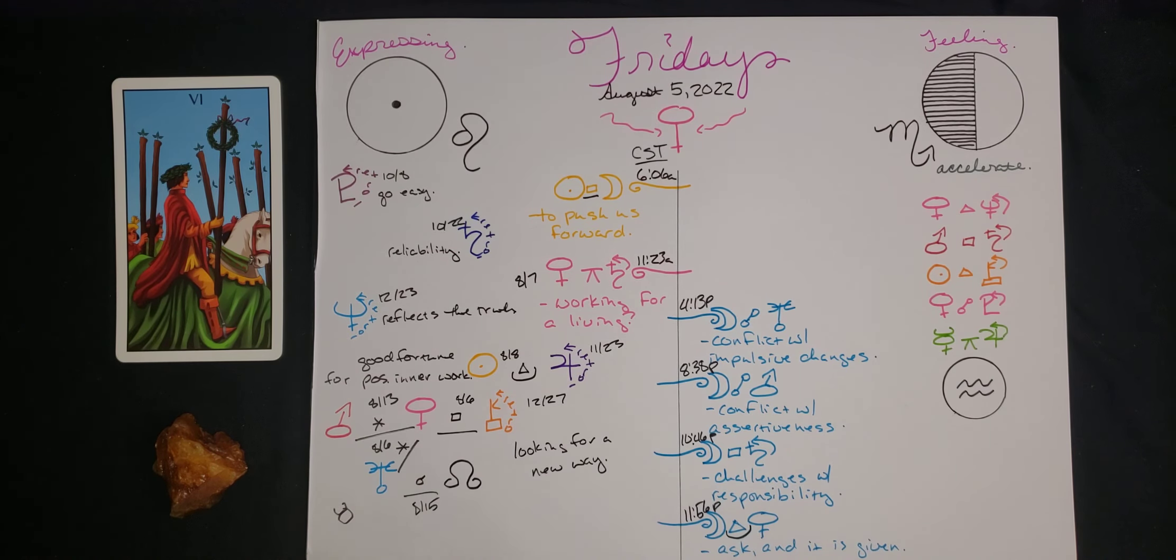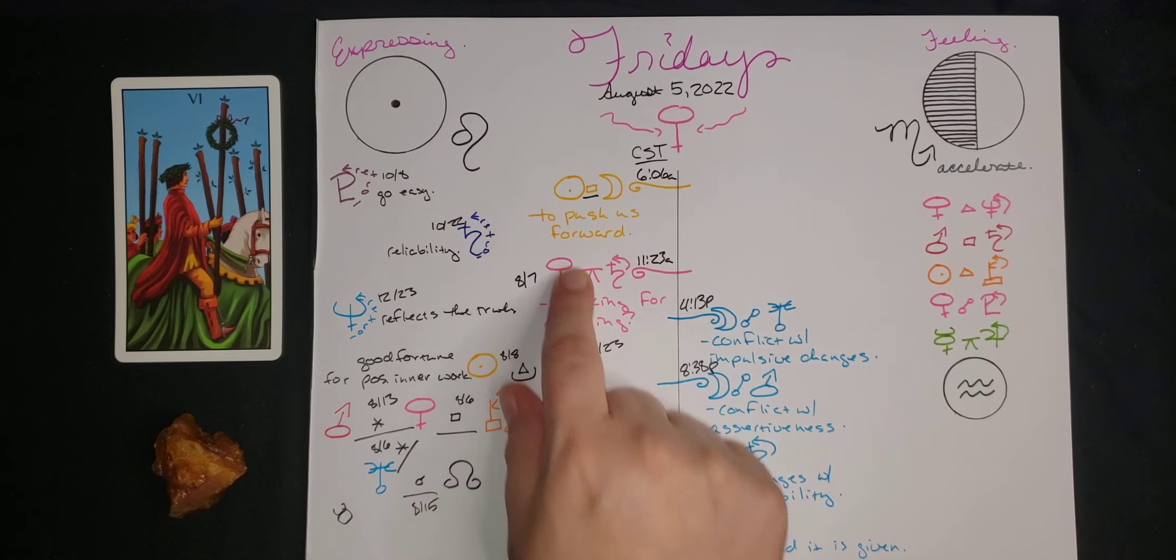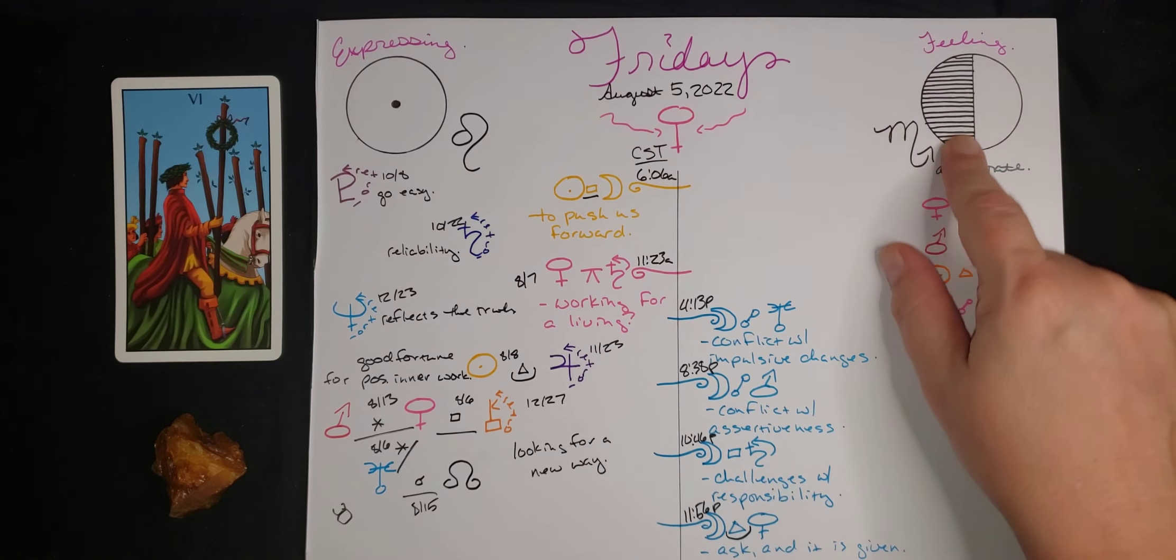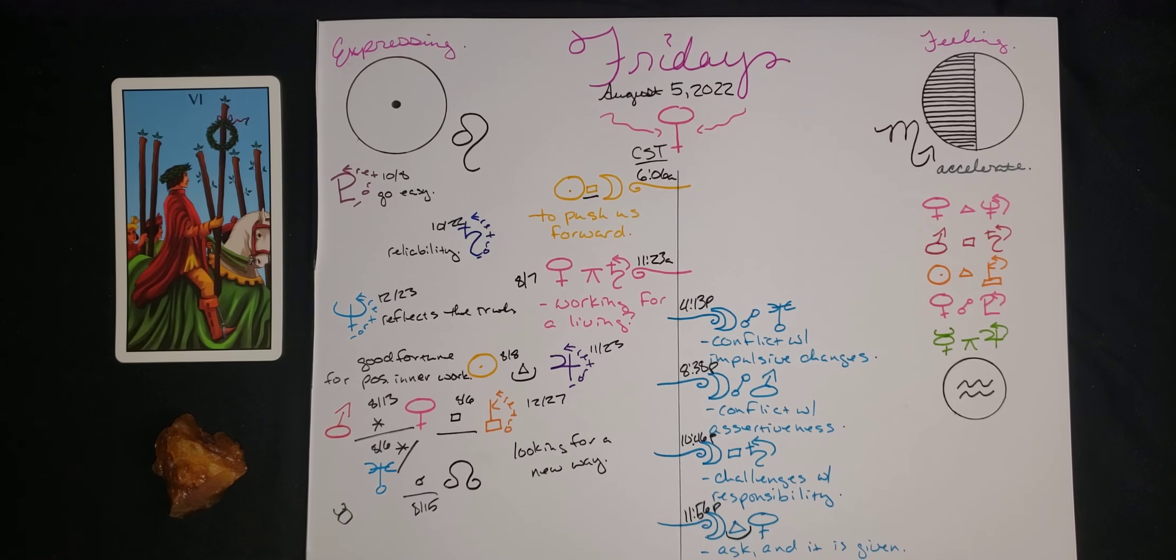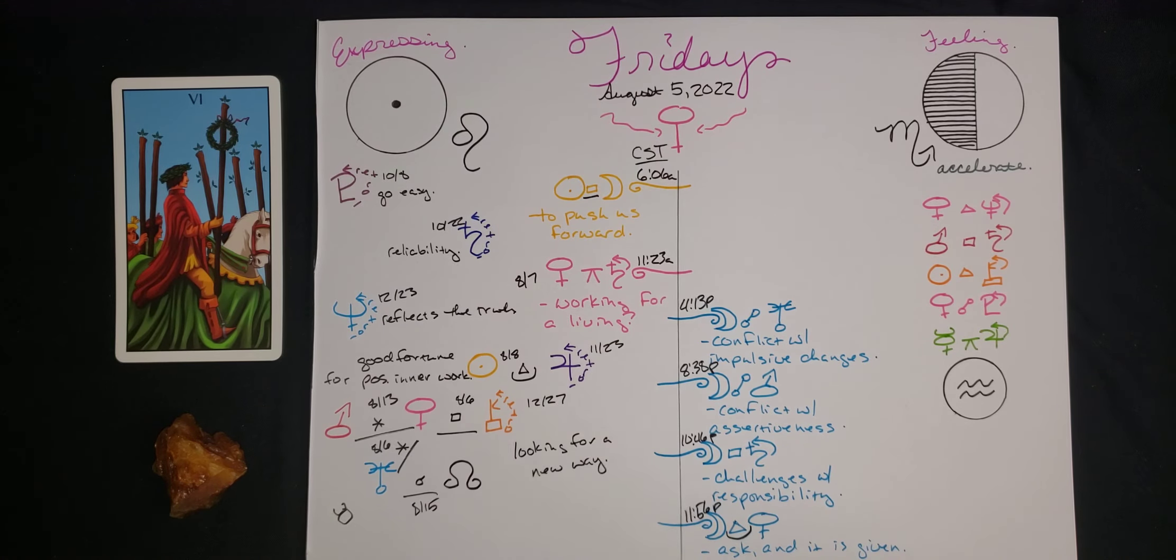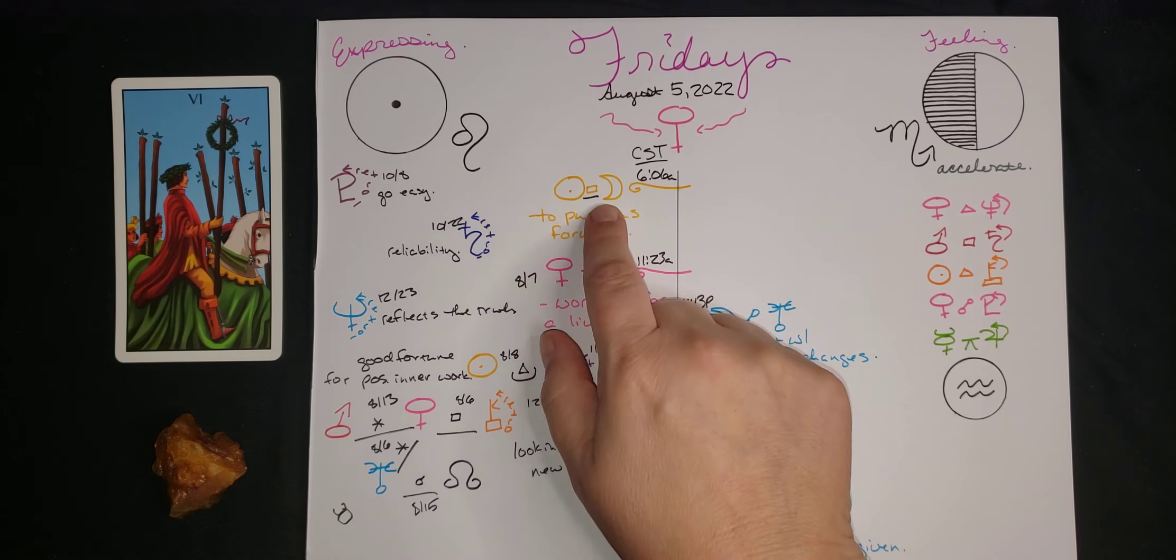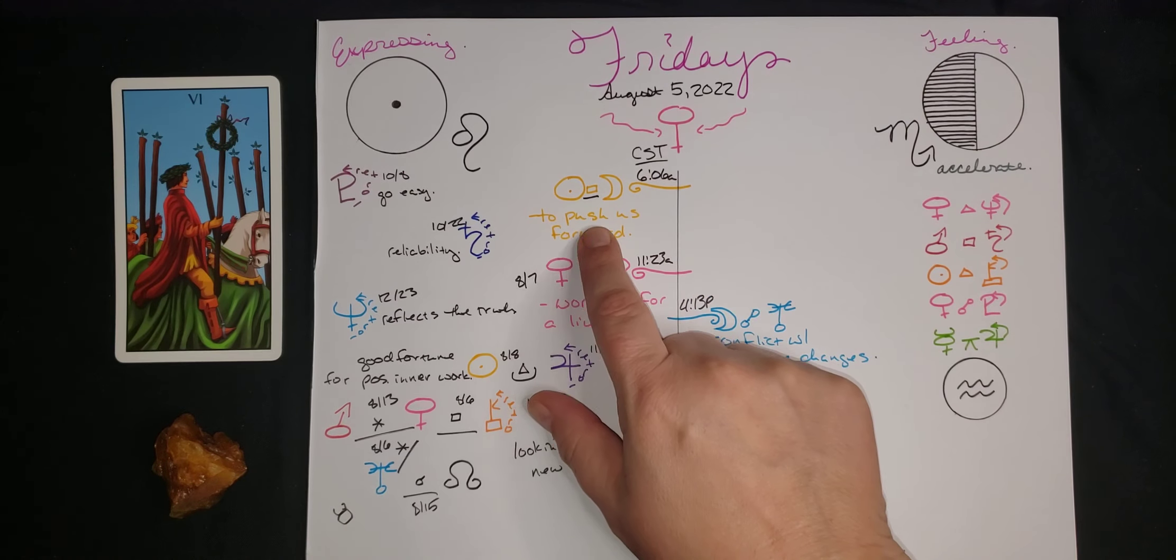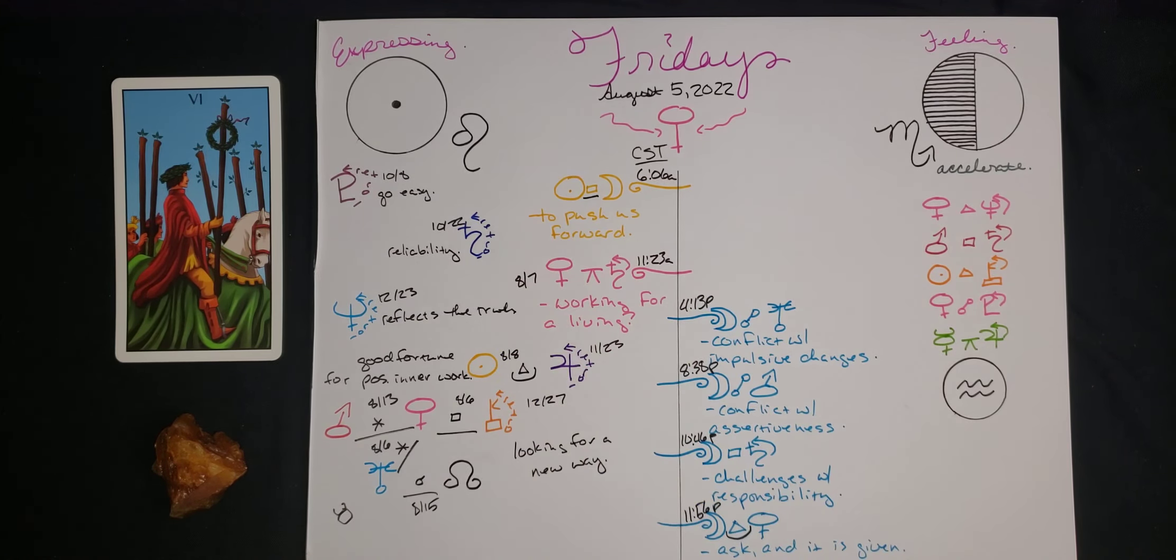On the sun side of the page today, early this morning sun went square to the moon. That really indicates that first quarter half lit moon. This is our outer life in a sort of challenging position with our inner life, our expressing life in a challenging position with our feeling life.